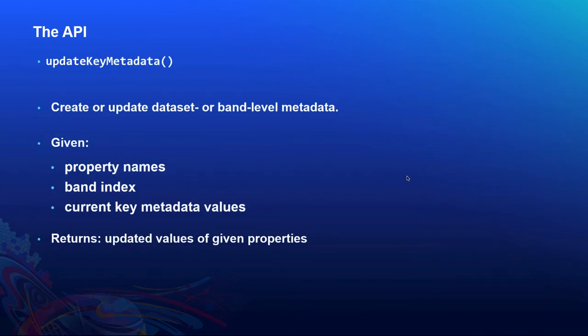After processing the pixels, the updateKeyMetadata method lets you update additional key metadata information on the output raster. It allows you to define any value for given properties or create new key metadata properties, such as band index, band names, or units of the output pixels — for example, temperature values in Celsius or elevation in meters.